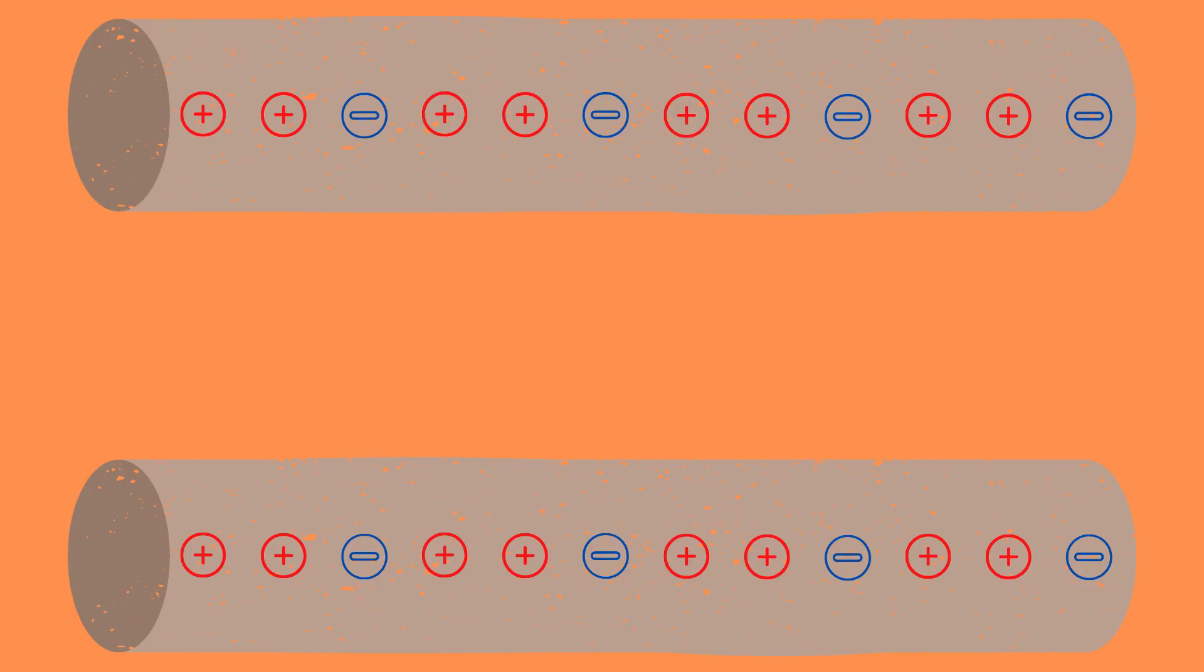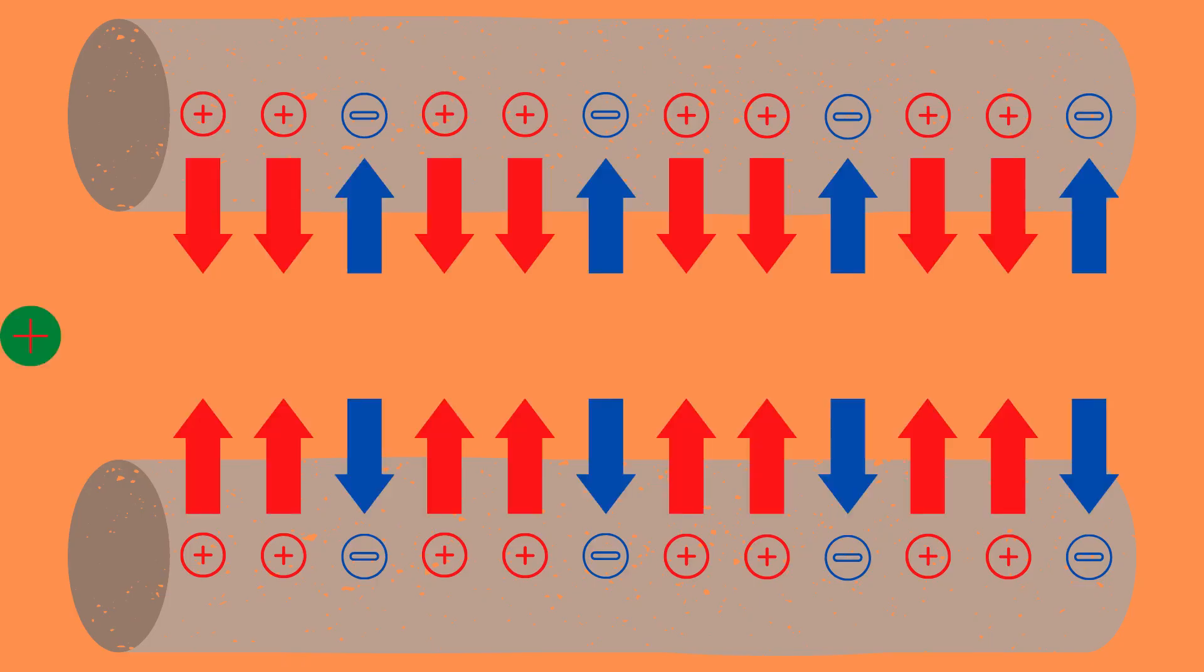Then the sample enters the mass analyzer part of the device. Here two electrical fields caused by the four parallel cell rods start affecting the ionized sample. These magnetic fields cause the ions to oscillate depending on their mass-to-charge ratio.